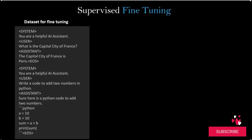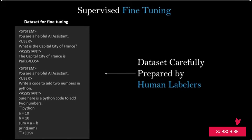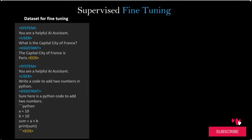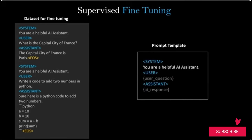On screen you can see an example of a dataset used to fine-tune the base model. Take a look at these special tokens: system, user, assistant, and EOA (end-of-sentence token). These datasets are formatted using a prompt template which varies depending on the LLM provider. For example, OpenAI and other providers might use different prompt formats, but the idea remains the same: creating datasets that mimic real human-assistant conversations. The training process remains similar, but the dataset quality is significantly improved with well-structured, human-like conversations.